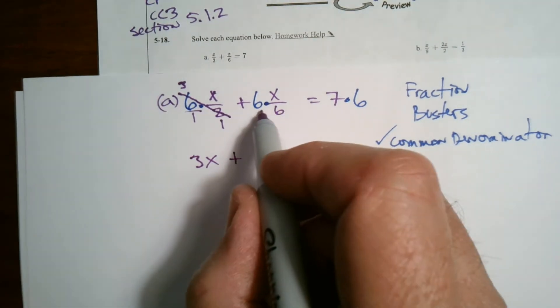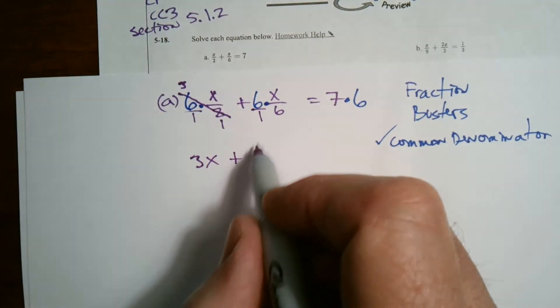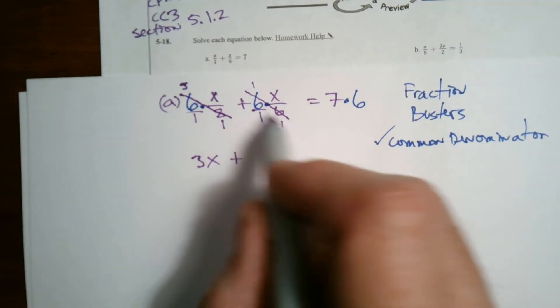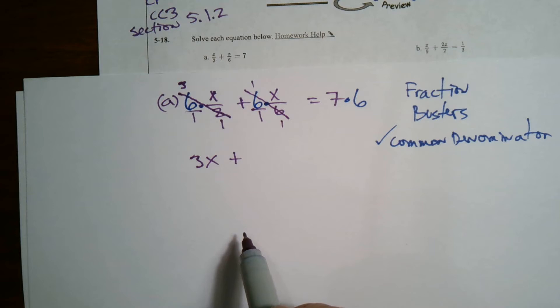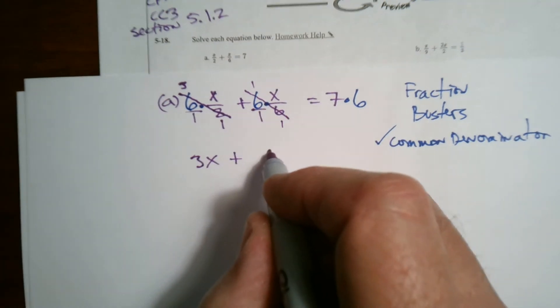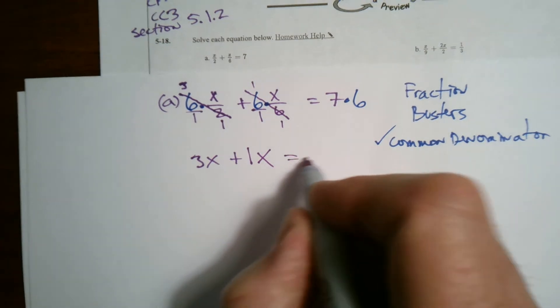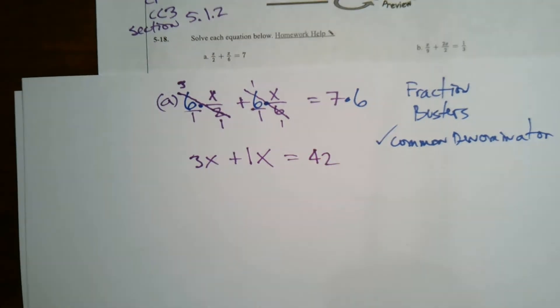And over here, the 6, take that over 1, and the 6, those actually each divide out and become 1. So they divide completely out. They simplify out. And all I'm left with is just x, or I could say 1x. And that equals 6 times 7 is 42.